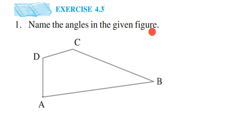Instead of writing it as angle A, angle B, angle C, or angle D — that is not the way we usually write down an angle. Suppose I'm aiming for vertex A, and you can see that there are two arms here.